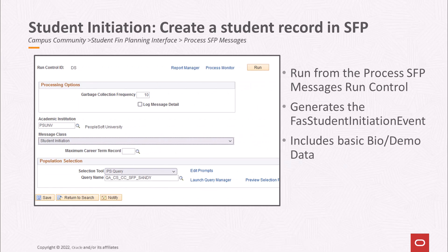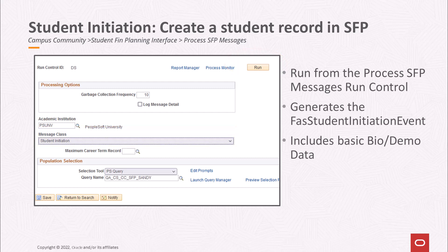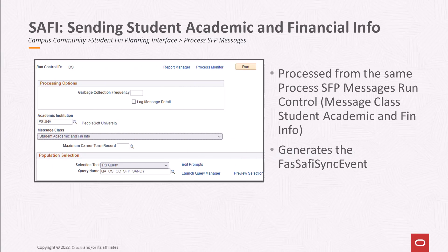The first step in exchanging student data with SFP is the Student Initiation message. This generates the FAS student initiation event, which is picked up by the integration between CS and SFP. This message is generated from the process SFP messages run control page and contains basic personal data such as name and date of birth for a student. Once a student has been created in an SFP instance, the next step is to send the SAFI message. The SAFI includes setup data like unit and GPA requirements, as well as projected term and projected course enrollment data, any existing CS course enrollment transfer and test credit, posted tuition fee charges by term, resource information including dispersed financial aid awards, and student financials waivers.